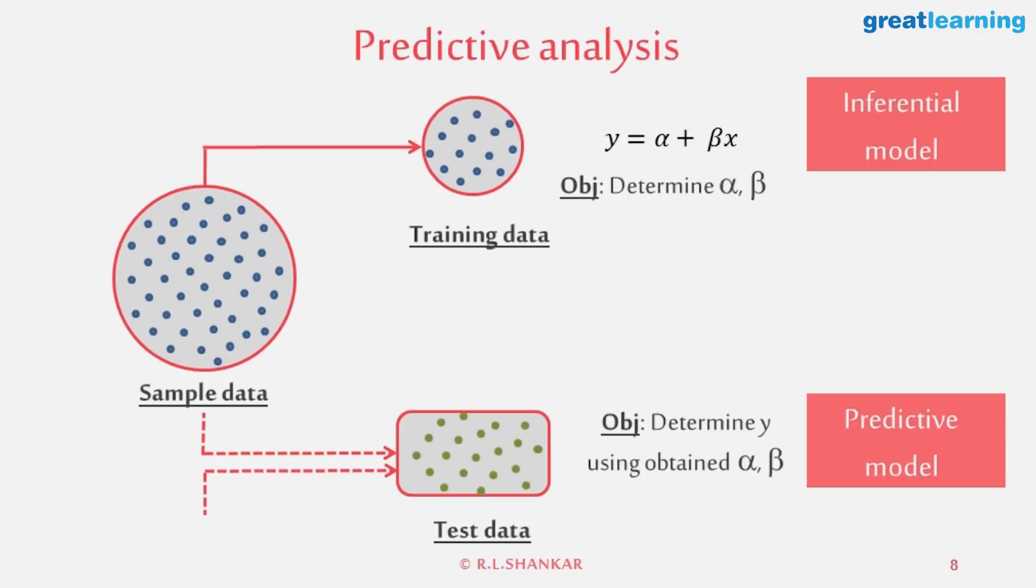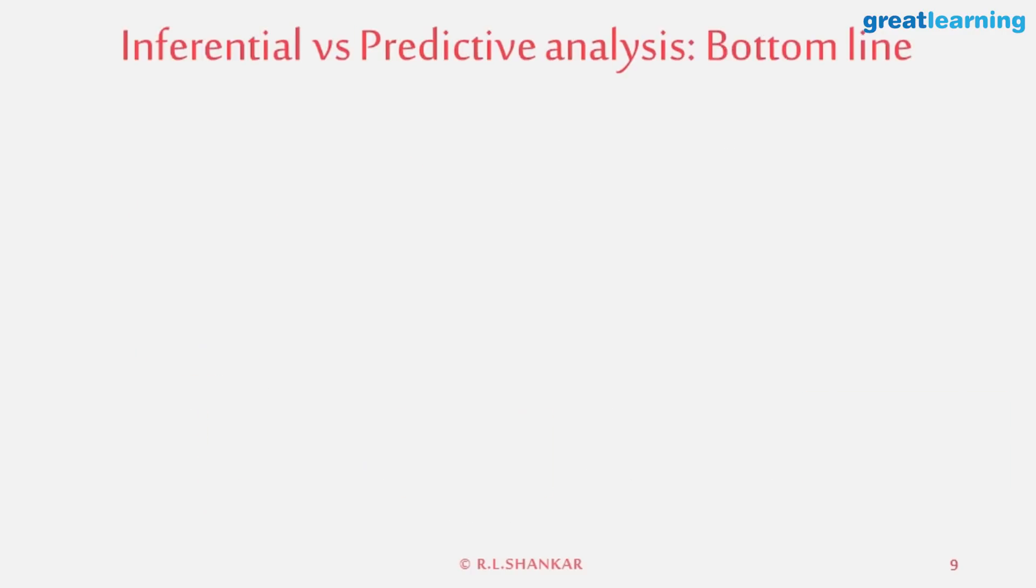But beyond that, the model remains exactly the same. So the bottom line, as I said, is that when people look at predictive models, sometimes they get either very excited or they get very nervous vis-a-vis an inferential model. But you've got to be very sure that you are talking about the same set of models. The only difference that comes up is in determining how accurate the model is in terms of the predictive accuracy.